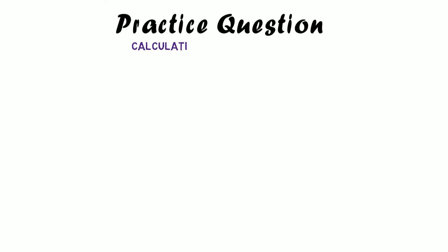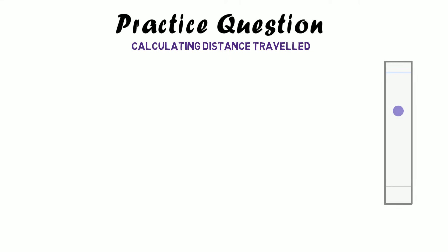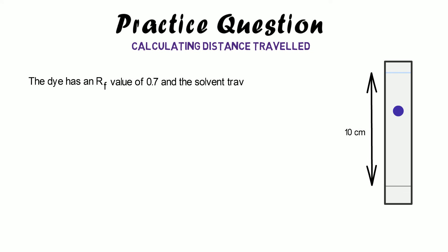You might be asked something a little different: instead of working out the RF value, you have to work out the distance travelled by the dye or the solvent. In this chromatogram, the solvent has travelled ten centimetres. If a dye has an RF value of 0.7 and the solvent has travelled ten centimetres, calculate the distance travelled by the dye. See if you can figure out how to do this.